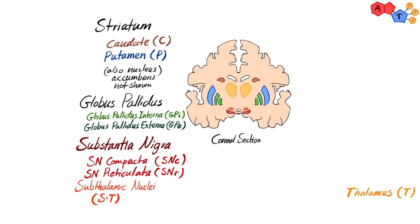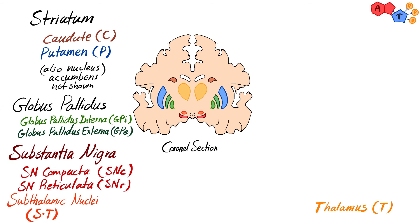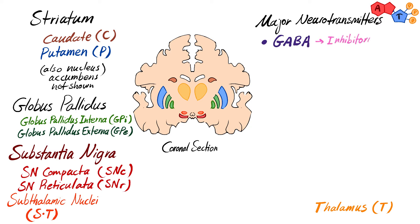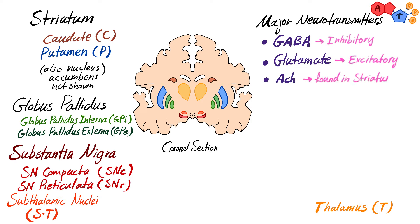These four major nuclei are connected by neurons that release neurotransmitters: GABA, which is inhibitory; glutamate, which is excitatory; acetylcholine, found in the striatum; and dopamine, which is projected from the substantia nigra pars compacta.